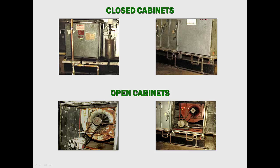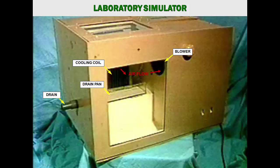Typically, what they see during operations are units like those shown in the top photographs. Only when the cabinet is open can the damage be revealed, as shown in the lower photographs. But even then, the causes are not apparent. But they can be illustrated vividly using laboratory-simulated air handlers with transparent panels. These simulators allow building owners and other concerned parties to see and understand how trap failures cause damage and contamination to their air handlers and buildings.